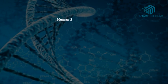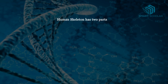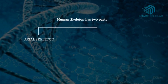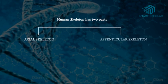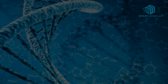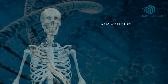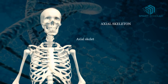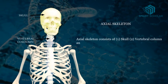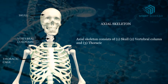The human skeleton has two parts: axial skeleton and appendicular skeleton. Let's learn about axial skeleton. Axial skeleton consists of skull, vertebral column and thoracic cage.